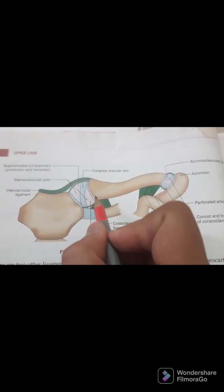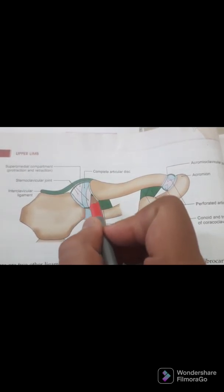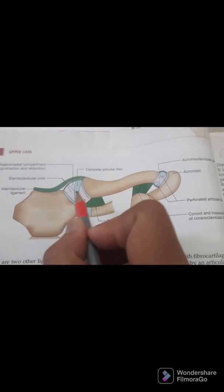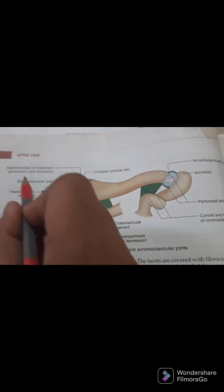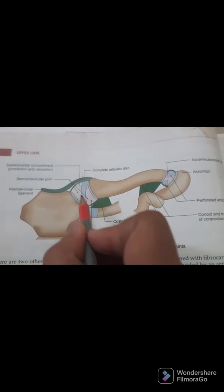You can see in the diagram the sternoclavicular joint with three elements: one is the medial end of the clavicle, and the second is the clavicular notch of the manubrium sterni. It is a complex joint, subdivided into two components: the supramedial component and the infralateral component.